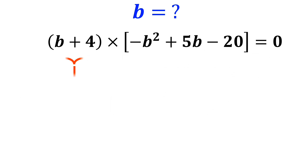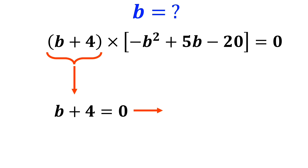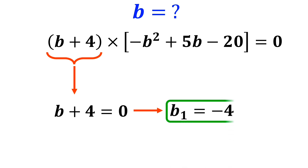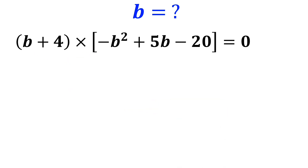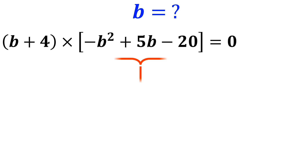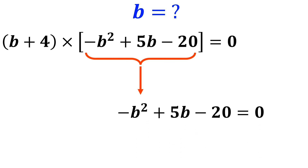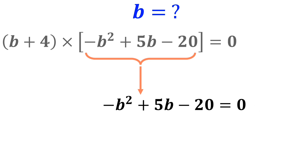Now we set b plus 4 equal to 0, so the first answer equals negative 4. And we set negative b squared plus 5b minus 20 equals 0.